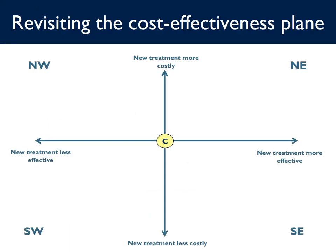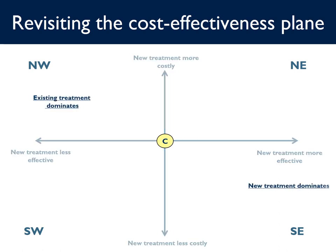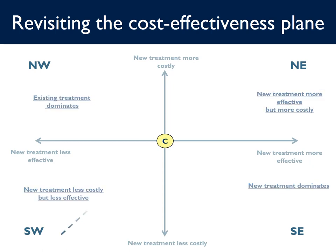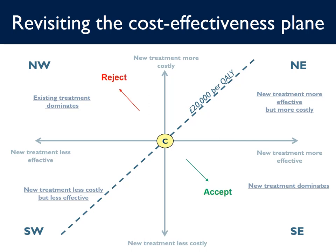Let's revisit the cost effectiveness plane and place the results of the trials. We have the line of £20,000 per QALY as the line defining whether an intervention is cost effective or not, as recommended by NICE. We accept interventions below the line and reject those above. CISO is placed in the northeast quadrant — more effective but more costly than common practice. The TOPCAT partial knee replacement is placed in the southeast quadrant — more effective and cheaper than total knee replacement. Both interventions were therefore cost effective and recommended for implementation.